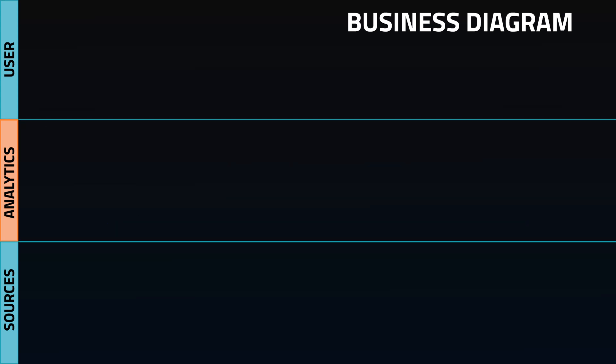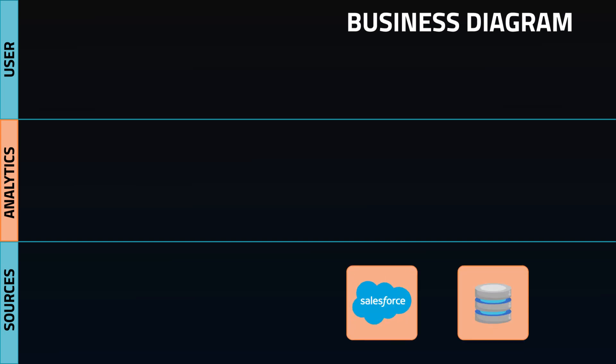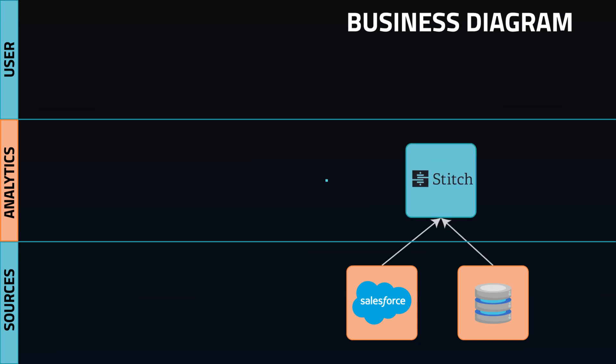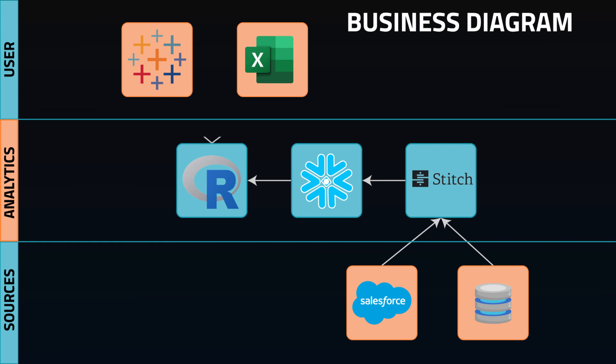I'm going to break things down into ownership groups. In this case, we have data coming in from Salesforce and an internal database, owned outside of the analytics team. We use Stitch to ingest, Snowflake to store, and R to model — this is what the analytics team owns. And then there are Tableau reports and Excel sheets which the users interact with. We can convey some complexity to help with requirements and expectations, but in a way that isn't overwhelming.